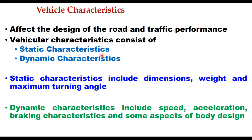Vehicle characteristics affect the design of the road and traffic performance both. The characteristics which are important are static as well as dynamic. Static characteristics include dimension, weight, and maximum turning angle — these are almost fixed. Dynamic characteristics vary with the driver and include speed, acceleration, braking characteristics, and some aspects of body design of the vehicle.